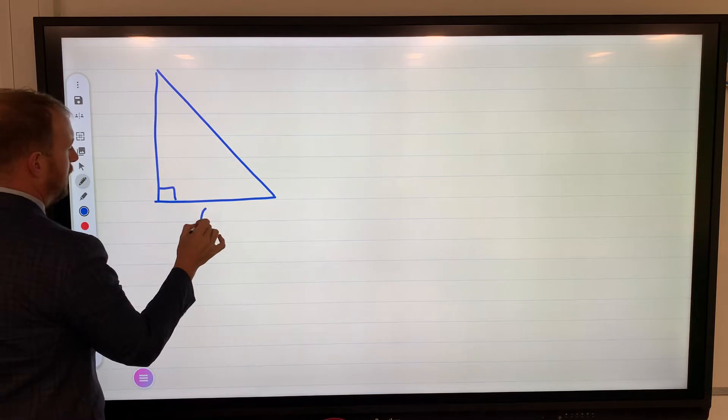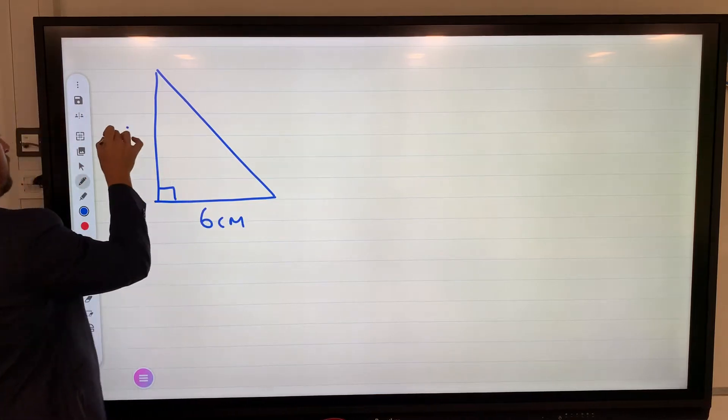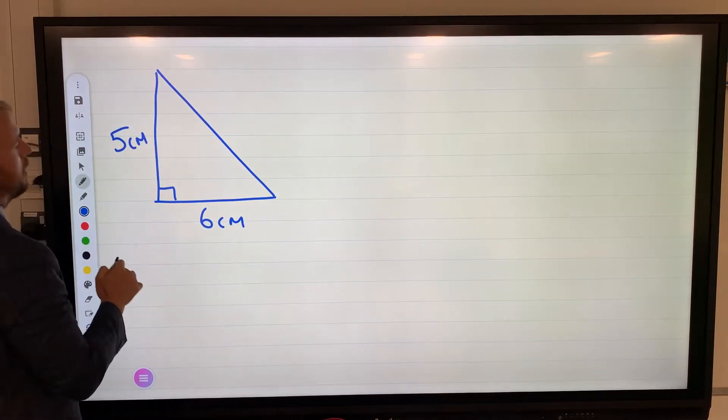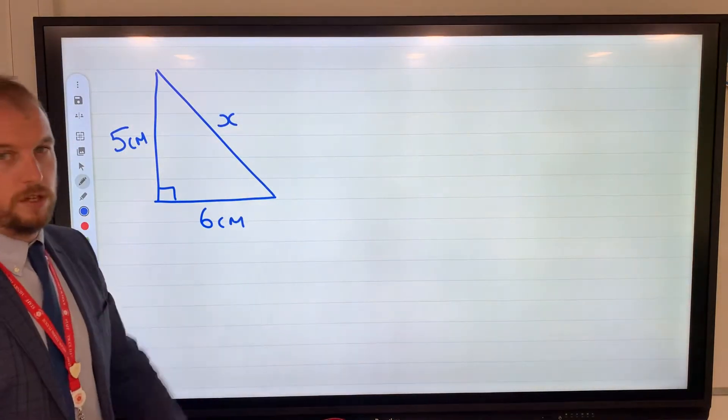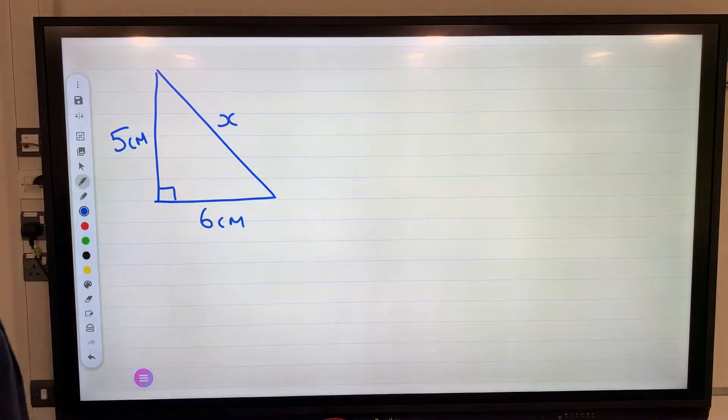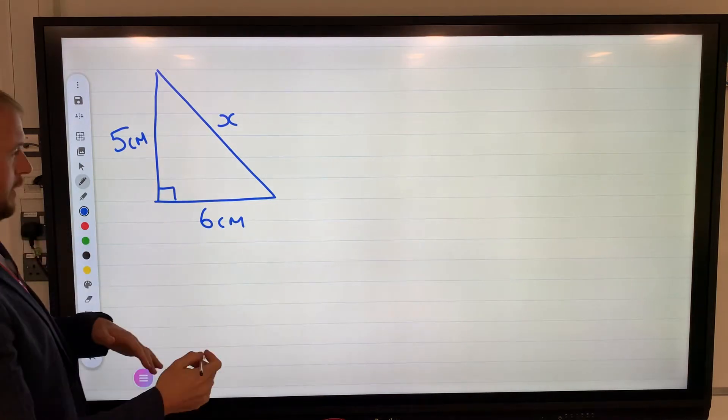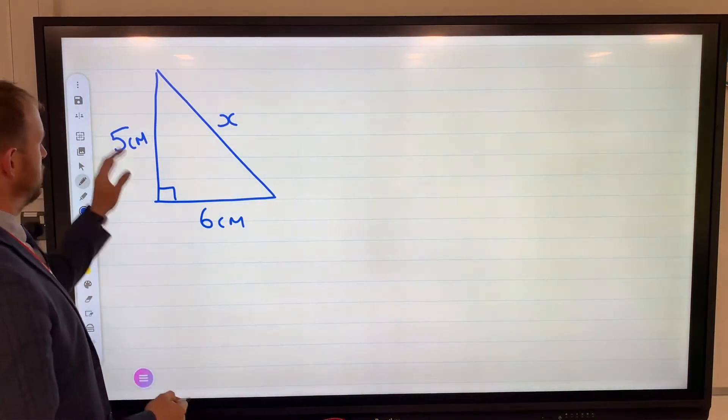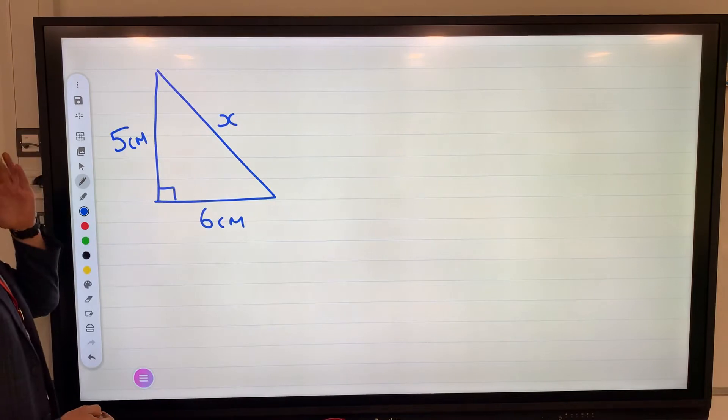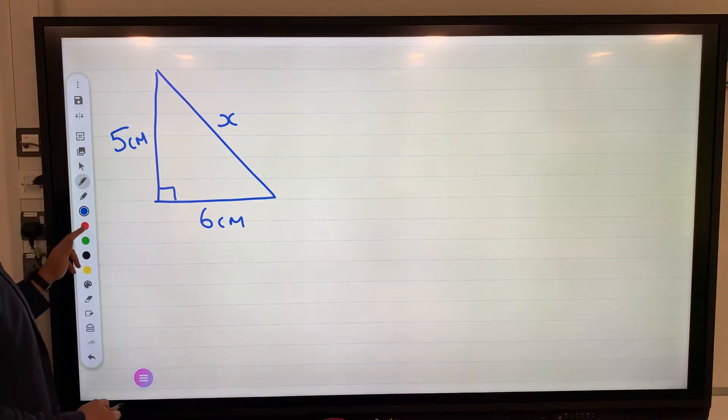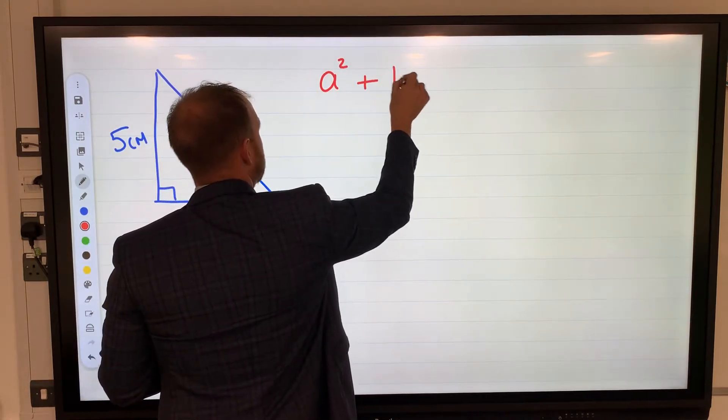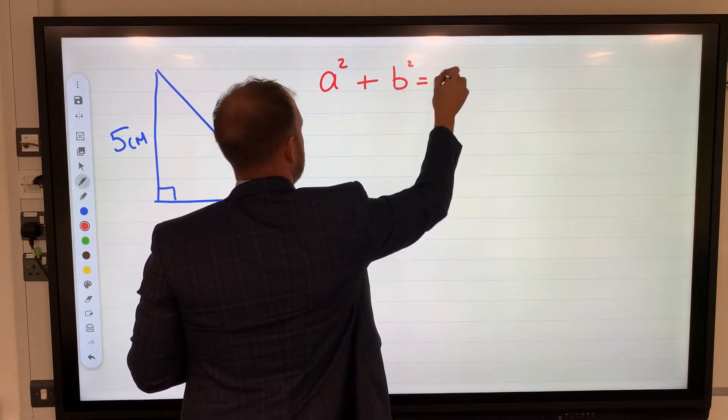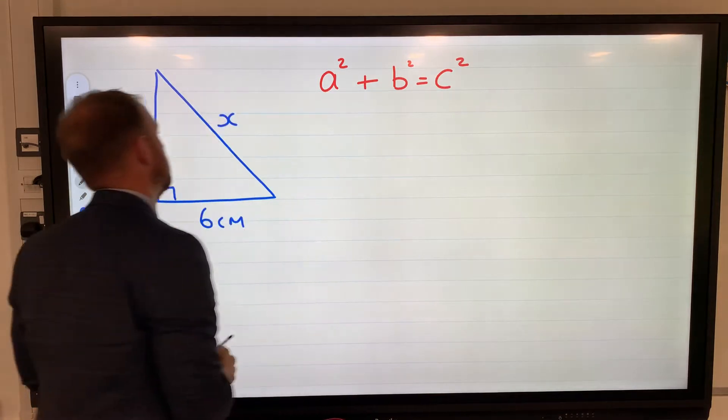We're going to have a value of 6 centimeters here, 5 centimeters here. This is just a sketch, not drawn to scale. Now Pythagoras created this formula - he realized there's a relationship between the three sides of a right-angle triangle. His formula is a squared plus b squared equals c squared.